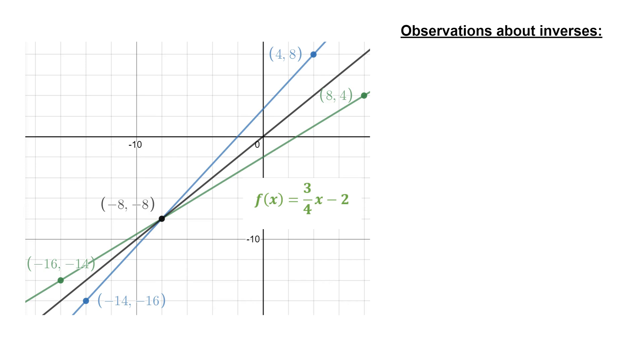Here's an example of a linear function that has a y-intercept that's not zero. The green graph, f of x equals 3 fourths x minus 2, and its inverse, f inverse of x equals 4 thirds times x plus 2. I want to make a couple of observations about inverses and see if you notice these same things for the two functions that you develop in problem 6 and 7.